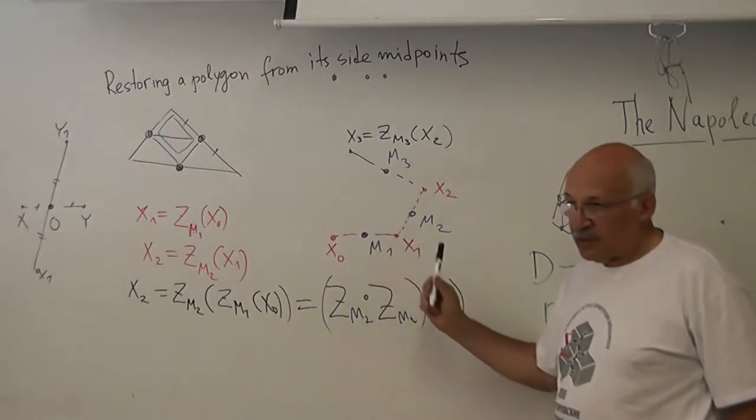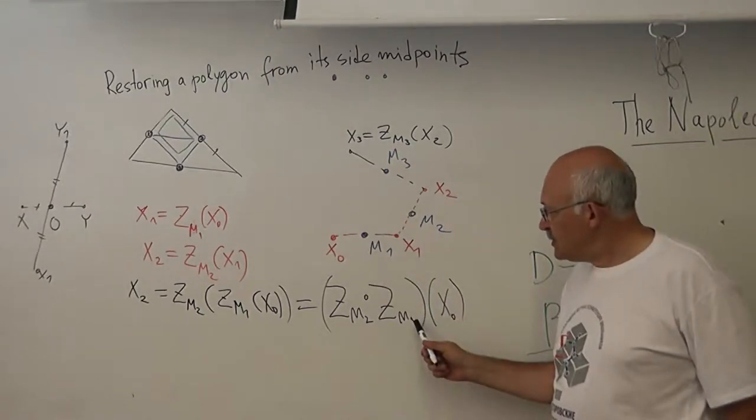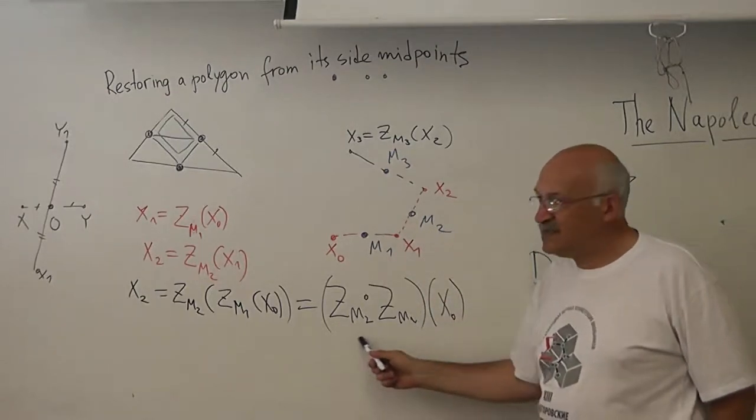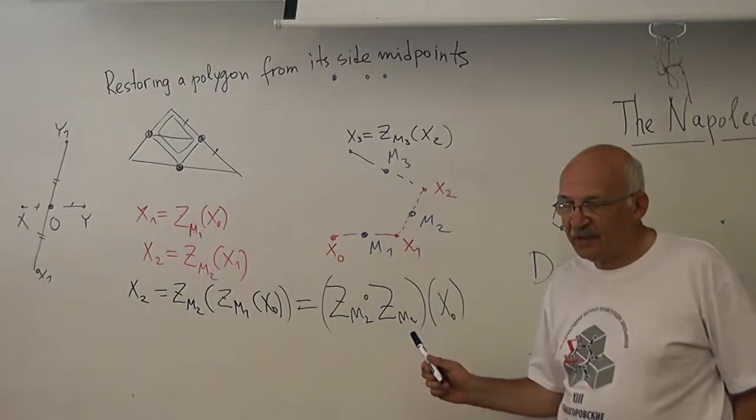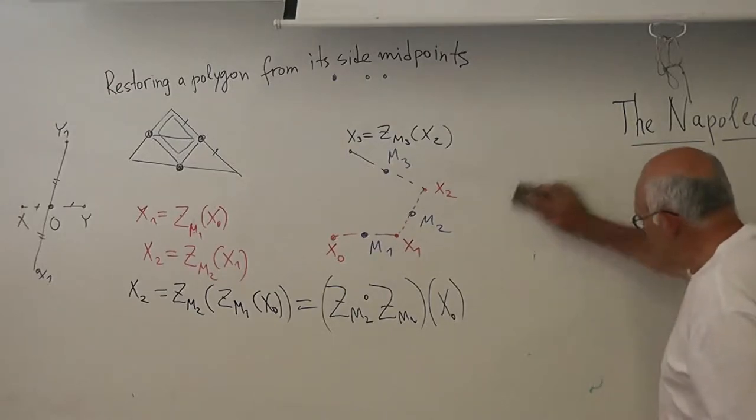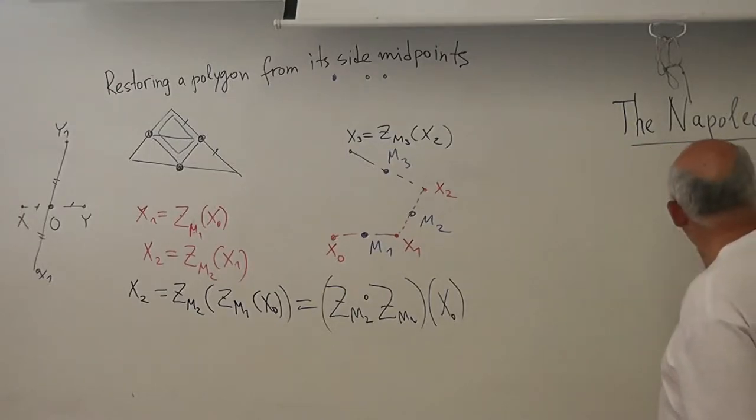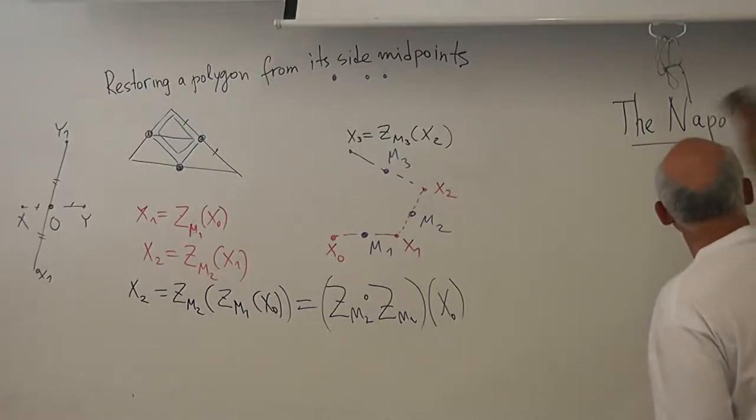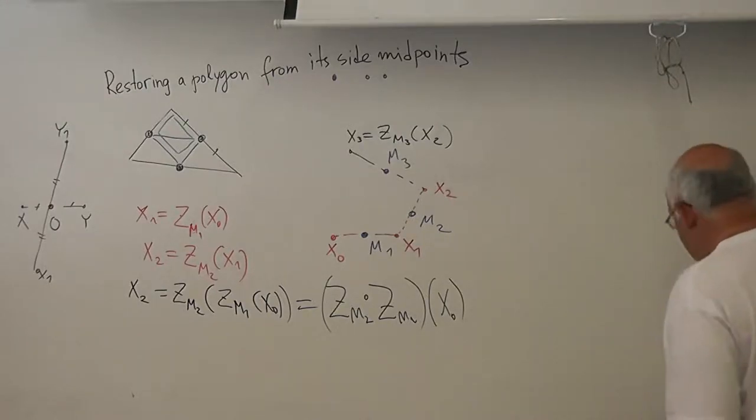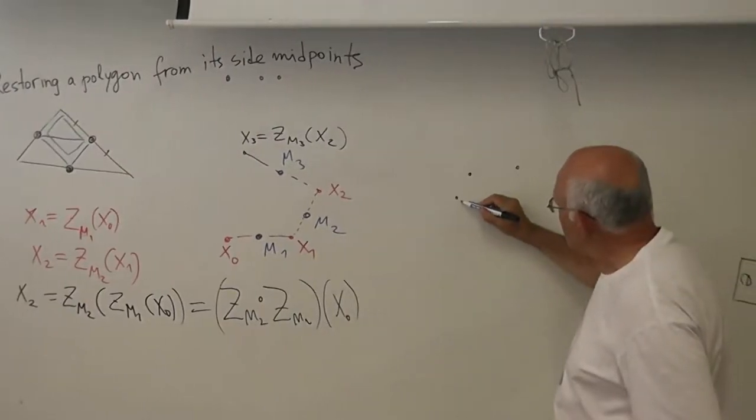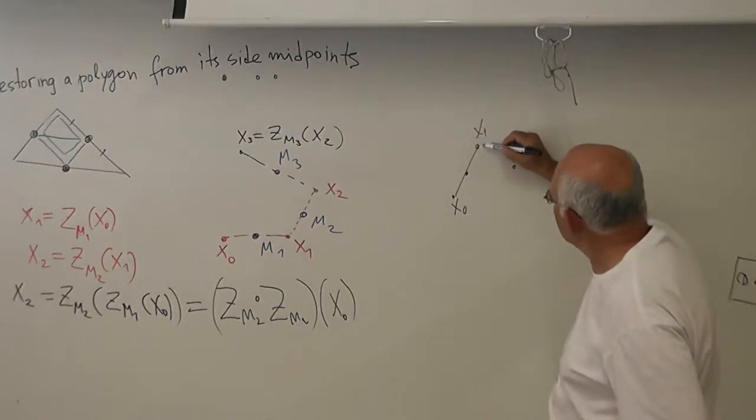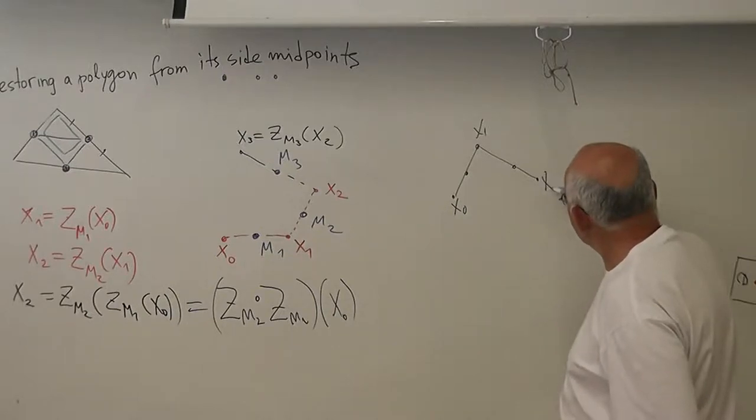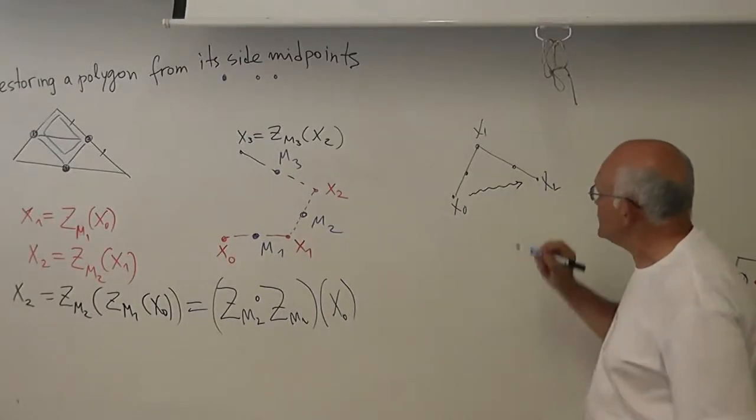From this equation... So now I am going to understand what is this image. This is not difficult. I take one point x from x0, x1, x2. So how can we obtain x2 from x0?